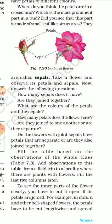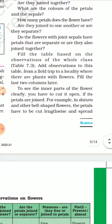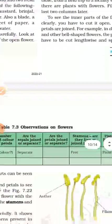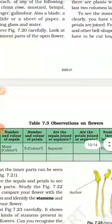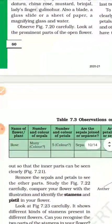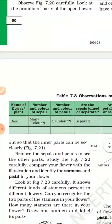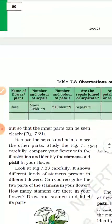We will compare them to this table. If they have the sepals joined, they have the petals joined. Fill the table based on the observation. If you have the observation, you will fill the table.